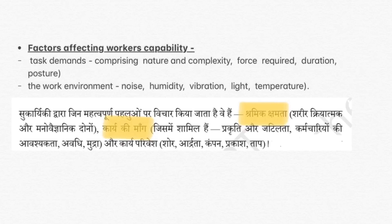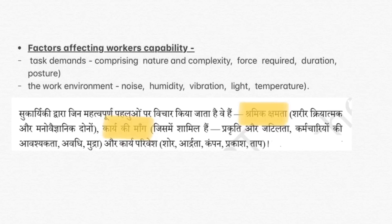Ab hum padhte hain: Factors Affecting Workers' Capability. The factors that affect workers' capability are: Task Demands — comprising the nature and complexity of the task, how complex it is, whether it is easy or difficult. How much force or energy is required when doing the work. Duration, meaning how much time it requires. Posture — whether you are sitting or standing while doing the work.